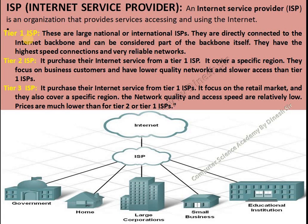Now the third type is Tier 3 ISP. Tier 3 ISPs are service providers that operate within a particular region — suppose within India, in a specific city — where internet may not be easily available. What they do is take internet service from Tier 1 or Tier 2 providers and allocate it to that particular area, making internet available there. They distribute the network within a small local area and develop their coverage area.